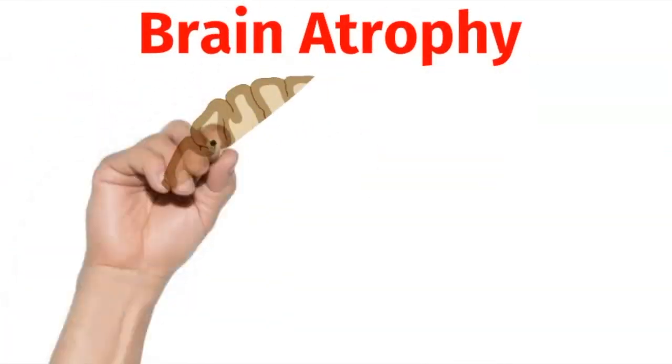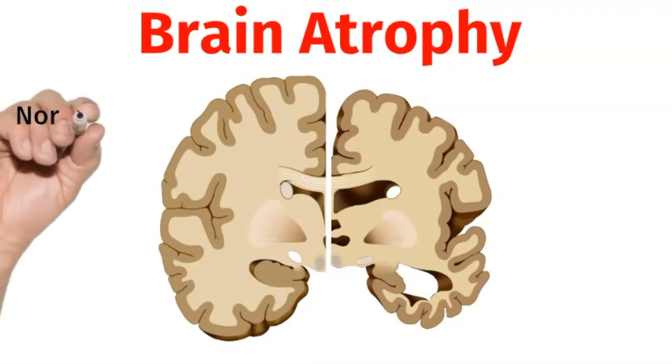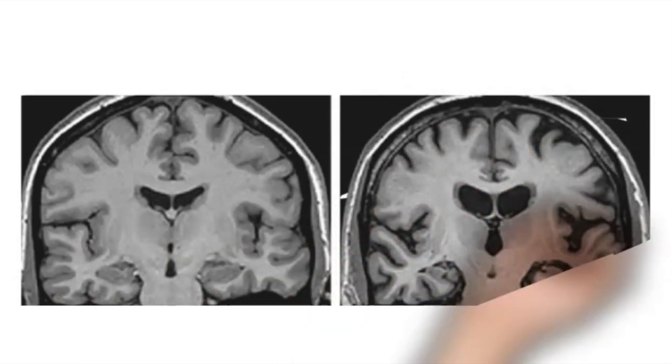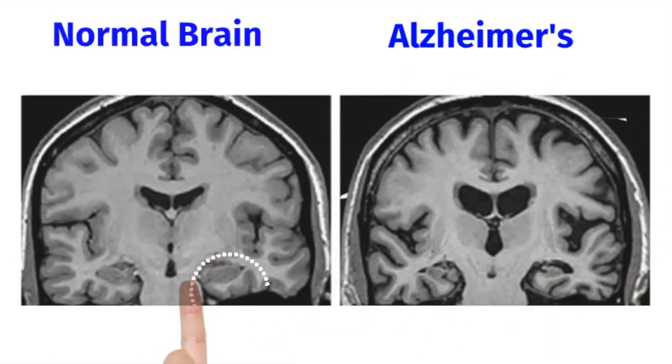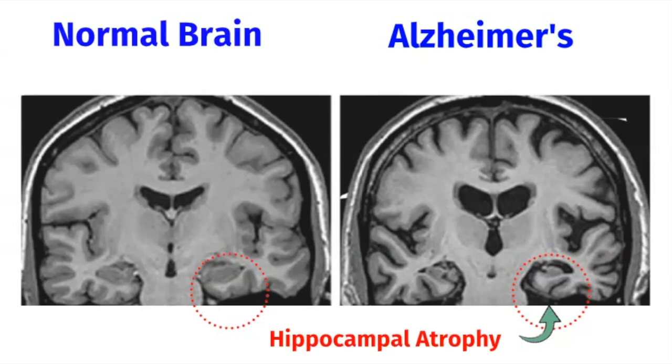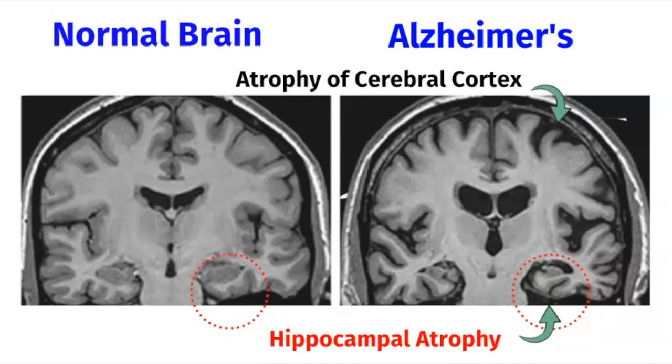In Alzheimer's disease, the brain undergoes atrophy, which means shrinkage. As you can see, there's a big difference between a normal brain, which is shown on the left side, compared to the brain of someone with Alzheimer's disease, which is shown on the right side. These changes can be seen on an MRI of the brain. The hippocampus is the part of the brain where a lot of our memories are formed. And in Alzheimer's disease, we can see atrophy of the hippocampus. We call this hippocampal atrophy. As the disease progresses, we also see atrophy of the cerebral cortex.